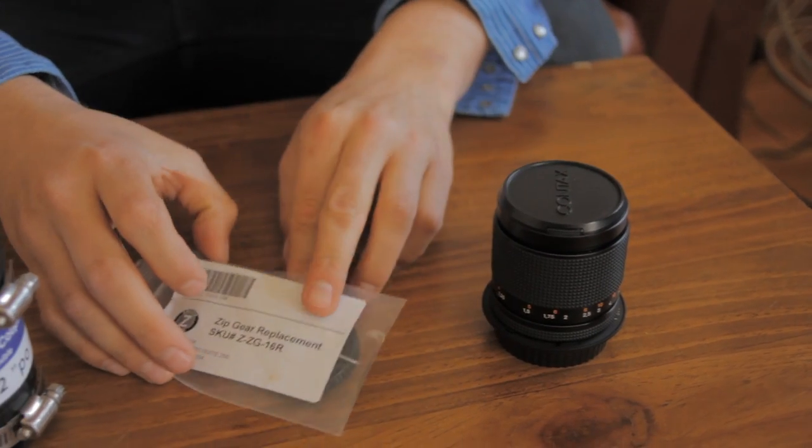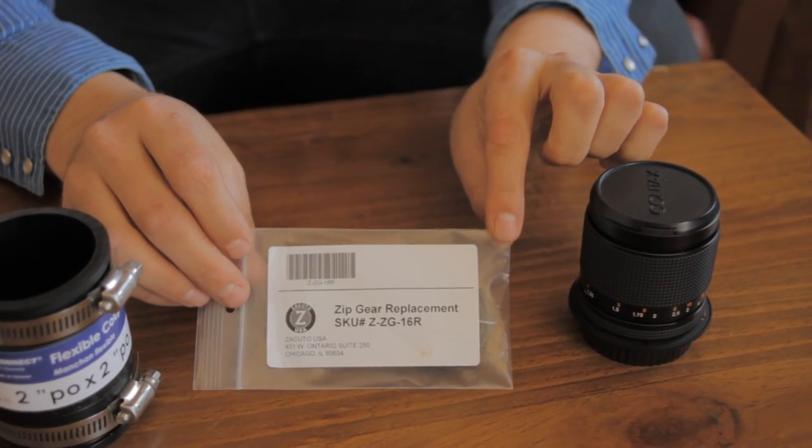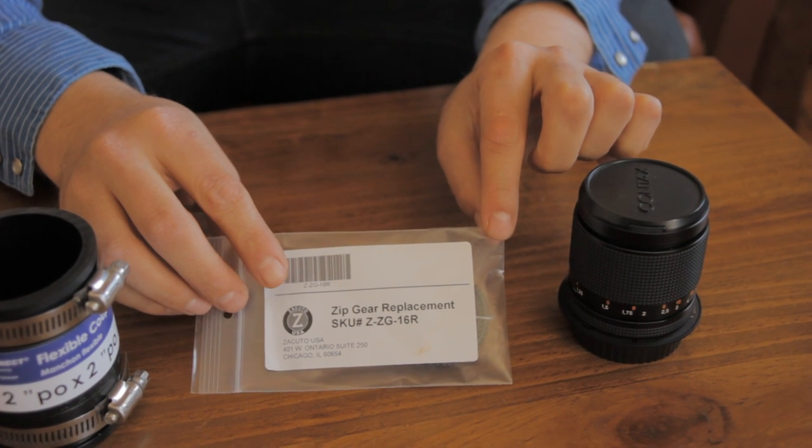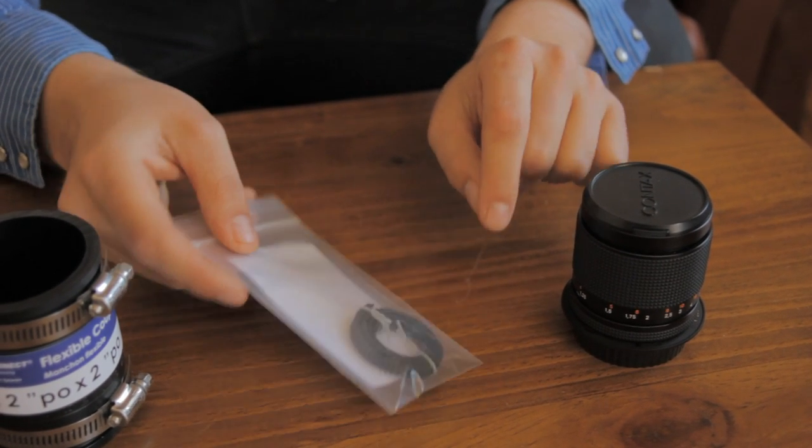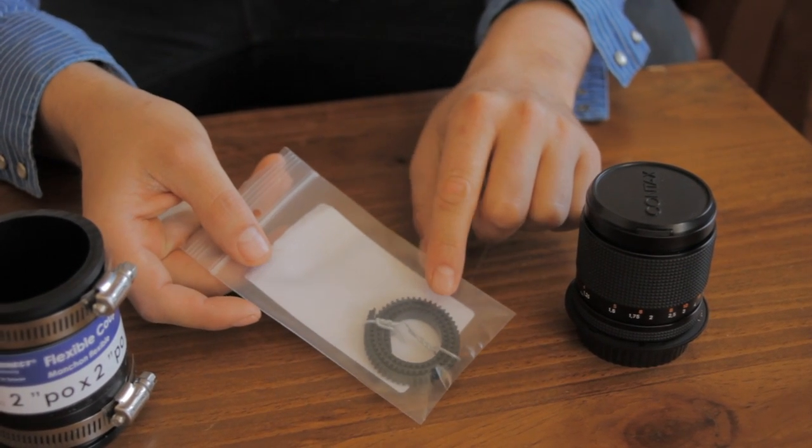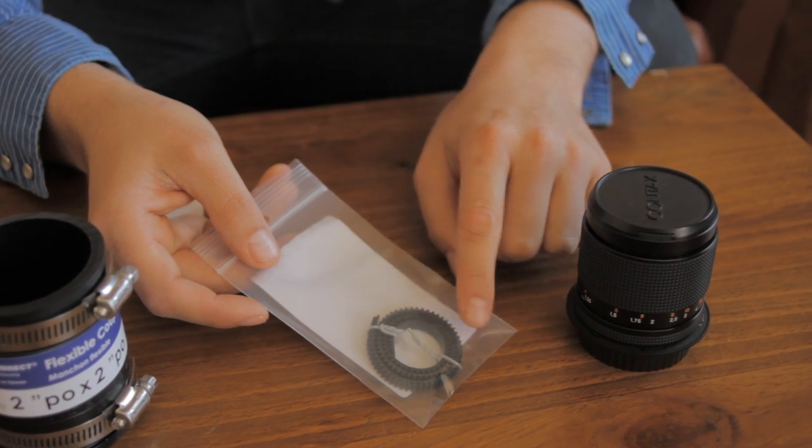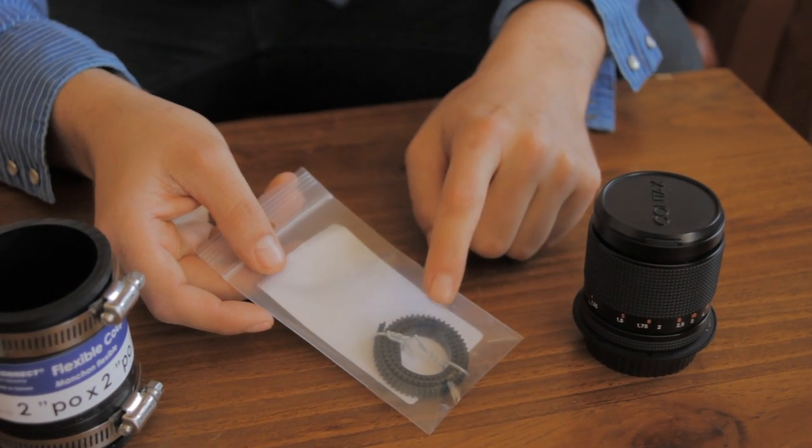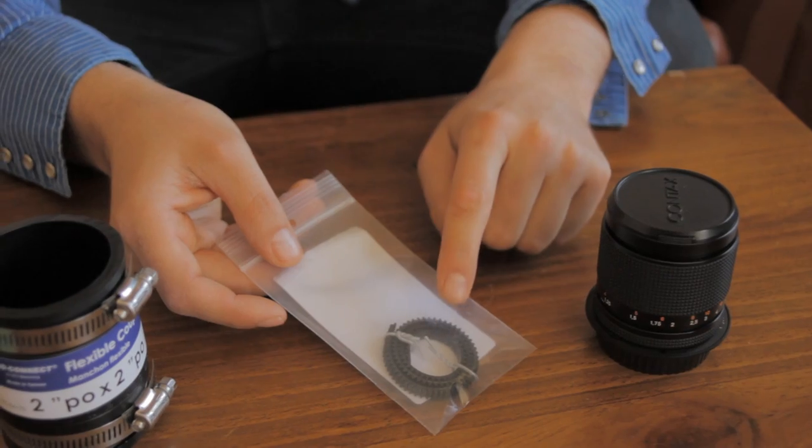Next thing you're going to need, you can order these from B&H. It's a Zacuto zip gear replacement. I think there's only one type. It's a .8 pitch. This is the 16 inch size and like I said I think that's the only one you get. That runs about $10.